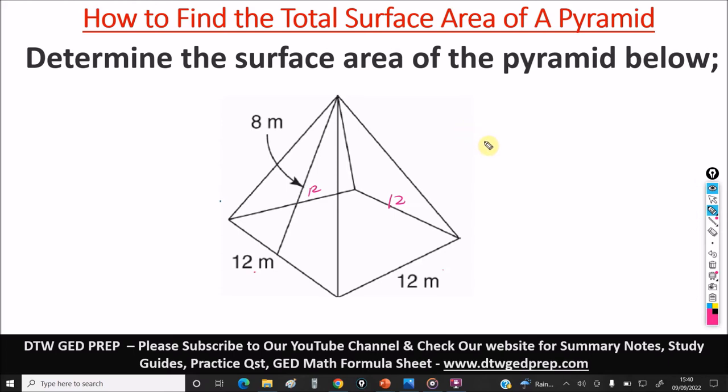So to find the surface area of a pyramid, the formula is half PS plus B, where P is the perimeter of the base.